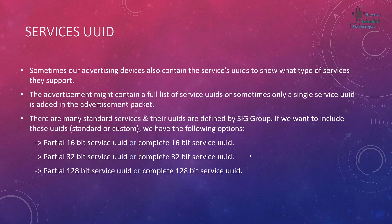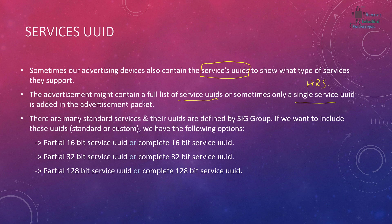Now let's look at service UUIDs. Advertising devices include service UUIDs to show what services they support, letting the connecting device know what the peripheral is capable of. The advertisement may contain a full list of service UUIDs or just a single one — for example, a heart rate service UUID, or a list including heart rate, DIS (Device Information Service), and so on.